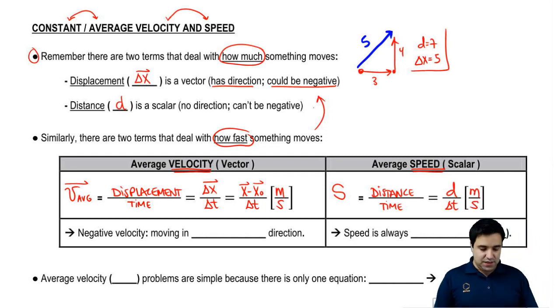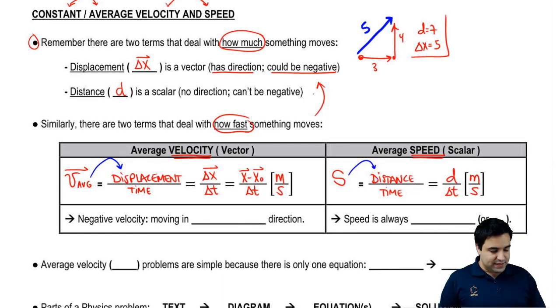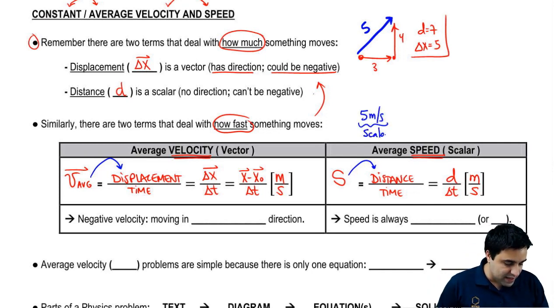Speed, I'm going to use the letter s. It is defined as distance over time. Distance, I'm going to call it d over delta t, and it's also in meters per second. I want to point out the difference here. This guy is defined in terms of displacement. This guy is defined in terms of distance. One is a vector, the other one is a scalar.